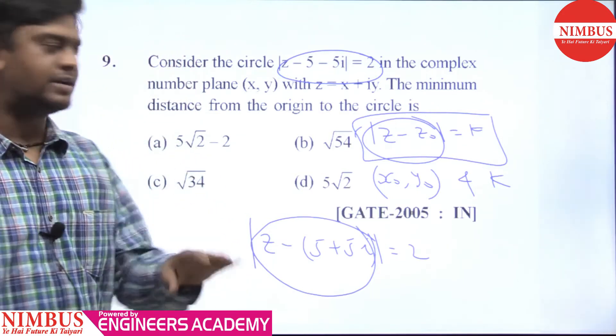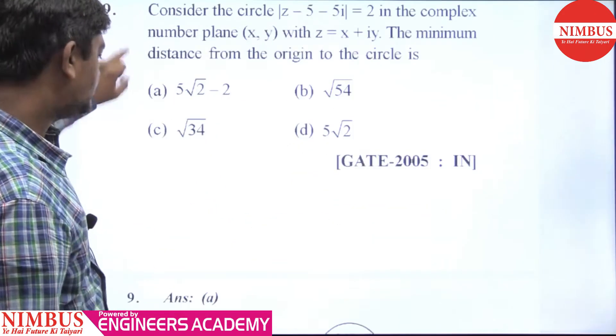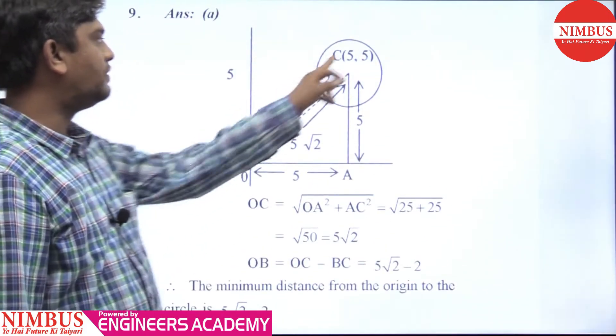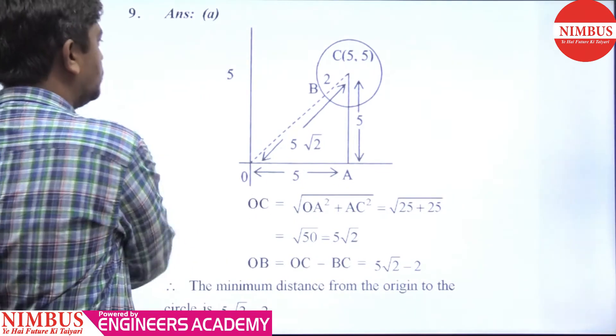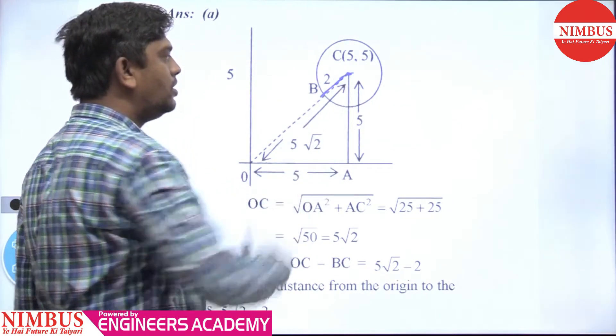Let us first plot the circle. That's our 5,5. This center is 5,5 and radius is 2.